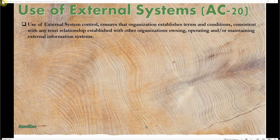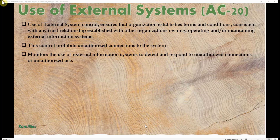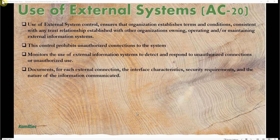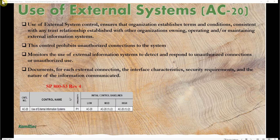The use of external systems control ensures that an organization establishes terms and conditions consistent with any trust relationship established with other organizations owning, operating, and/or maintaining external information systems. This control prohibits unauthorized connections to the system, monitors the use of external information systems to detect and respond to unauthorized connections or use, and documents for each external connection the interface characteristics, security requirements, and the nature of the information communicated. This control is selected for all three baselines in SP 800-53 Rev 4 — the low baseline, the moderate baseline with some enhancements, and the high baseline with some enhancements as well.